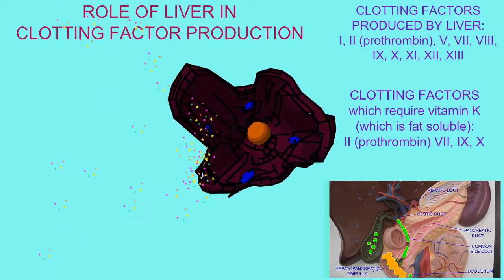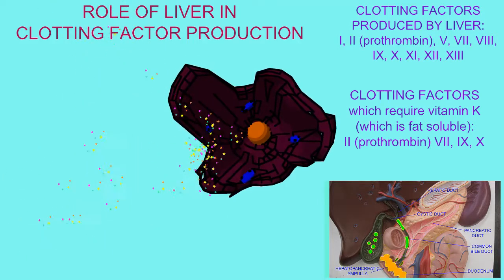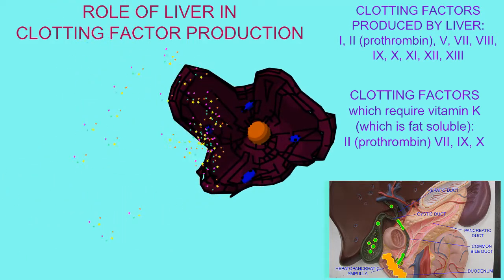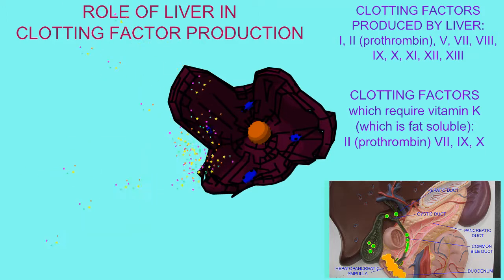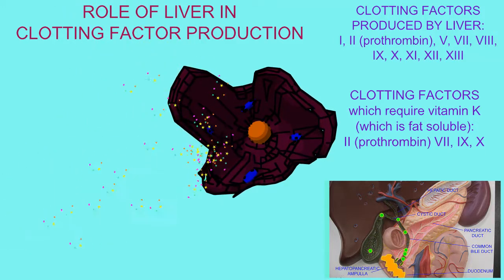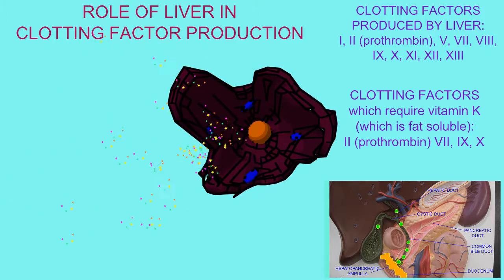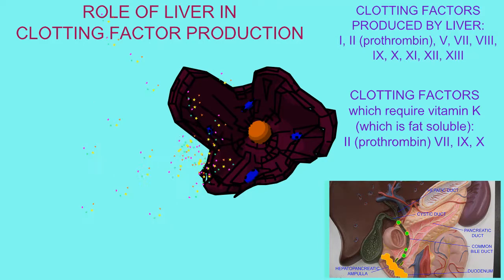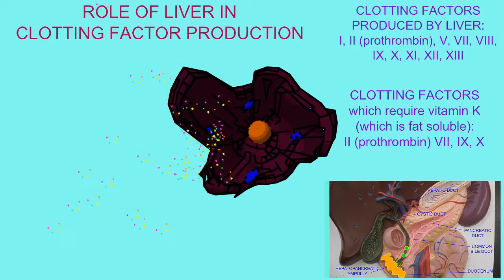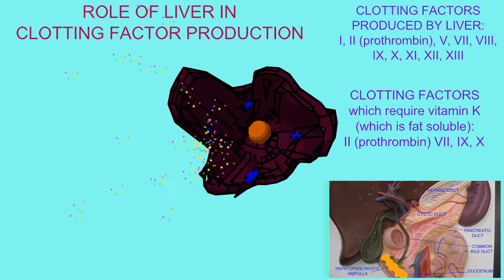Liver cells also make a number of other proteins involved in coagulation, such as protein C. Thus, abnormalities in blood coagulation cascades can be caused by disorders of the liver, such as cirrhosis and hepatitis.